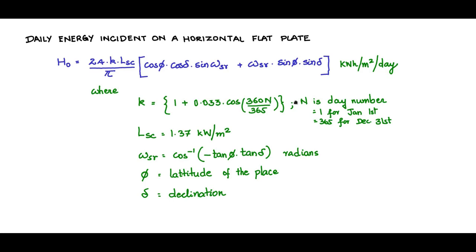And n is the day number: 1 for January 1st, 365 for December 31st. This K is an expression obtained empirically to obtain the insolation value on a given day. Lsc is the solar constant, mean solar constant, which is 1.37 kilowatts per meter squared.